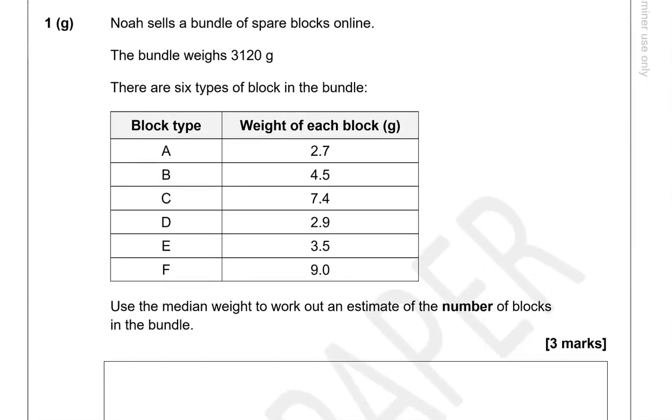Noah sells a bundle of spare blocks online. The bundle weighs 3,120 grams. There are six types of blocks in the bundle: type A, B, C, D, E and F. And weight of each block in grams. Use the median weight to work out an estimate of the number of blocks in the bundle. So, we need to work out the median of these numbers. We put them in order and find the middle number, or the middle two numbers.